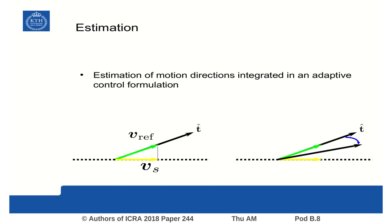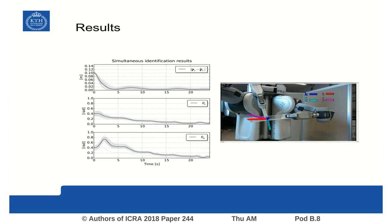The degrees of freedom of the mechanism are estimated with an adaptive algorithm, integrated with the control law which defines the reference velocities for the manipulation task.